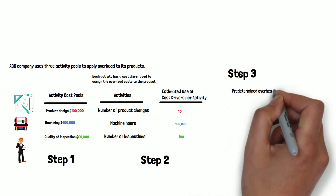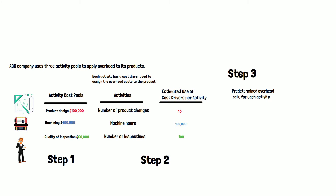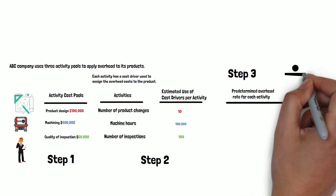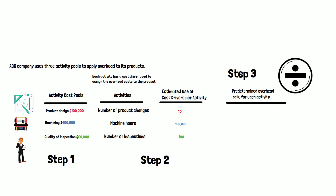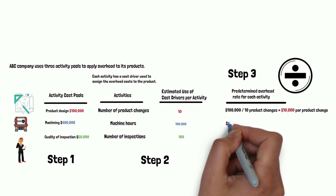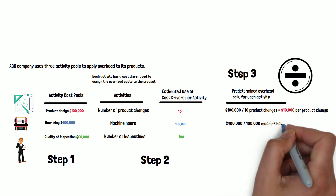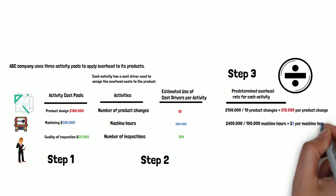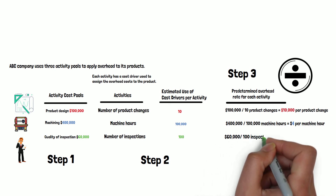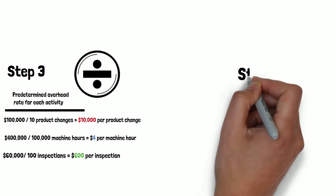Step three, we need to calculate the predetermined overhead rate for each activity. We divide the total activity cost pool cost by the level of activity. For product design: $100,000 divided by 10 product changes equals $10,000 per product change. For machining: $400,000 divided by 100,000 machine hours equals $4 per machine hour. For inspection: $60,000 divided by 100 inspections equals $600 per inspection.